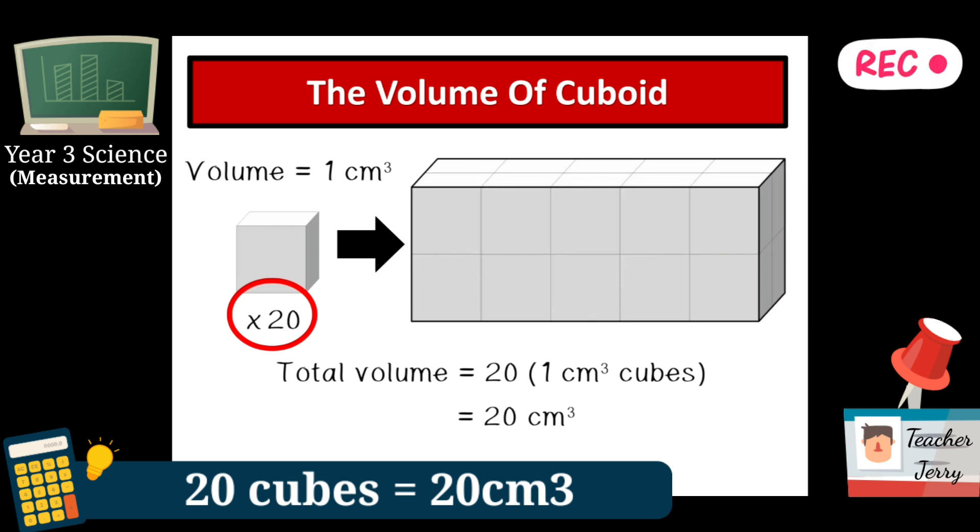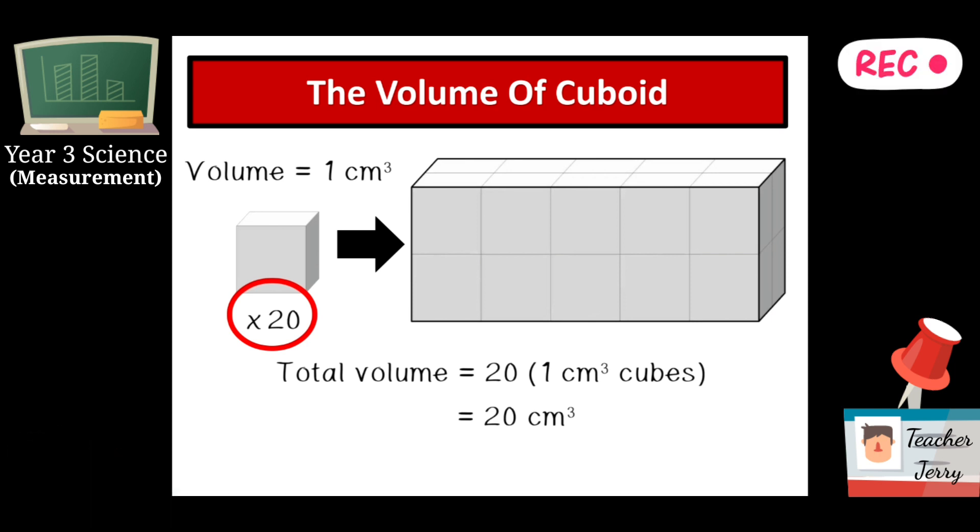Which means the volume is equal to twenty multiplied with one cubic centimeter. The conclusion is the volume of the cuboid is twenty cubic centimeters.